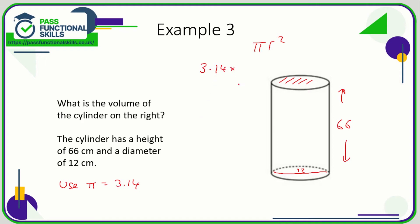The area of that circle is 3.14 times 6 times 6, which is 113.04 square centimeters. So the volume of the cylinder is 113.04 square centimeters, the area of the circle, multiplied by its height.